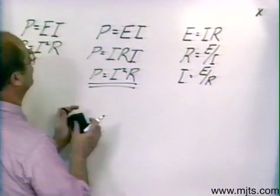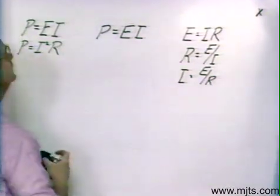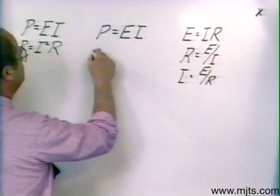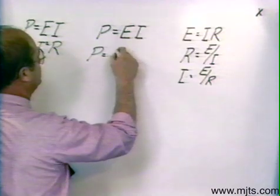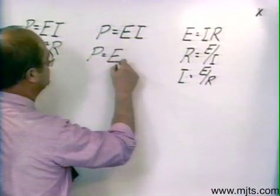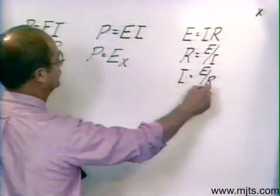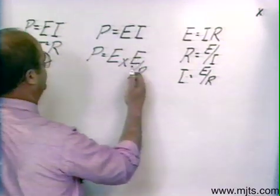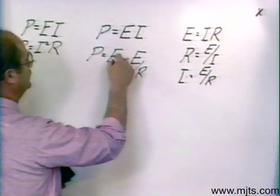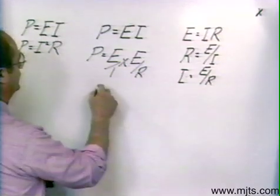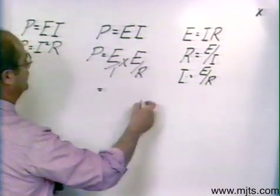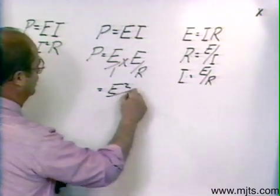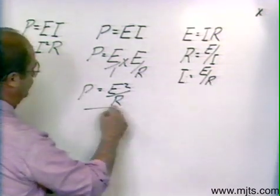Now, what we want to do, go back to the basic power formula again. Substitute this time what we know for I to be true in Ohm's Law. Then we'll have P then is equal to E times E over R. Now, remember in our fractions, if we're multiplying fractions, we have to have complete fractions. So, I'm going to take E, divide it by 1. When I do that, I'll multiply across the top and across the bottom like we did in the first year. We'll have E times E, which is E squared, over 1 times R, which is R.